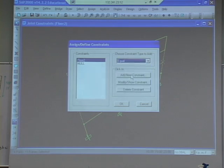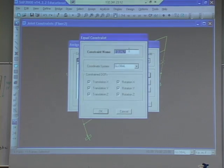So we do it again, set the equal displacement constraint, call this one floor three, and again just select translation in the x.